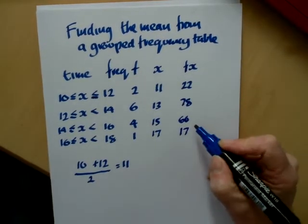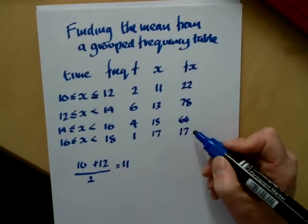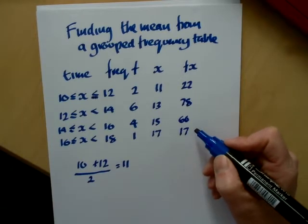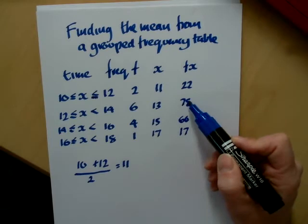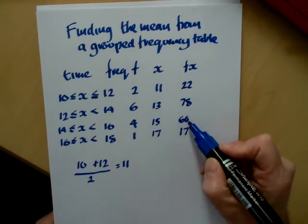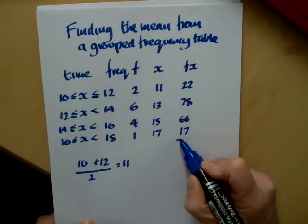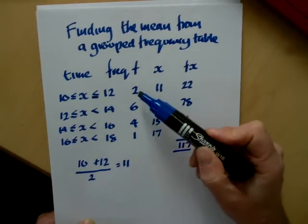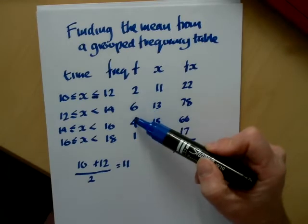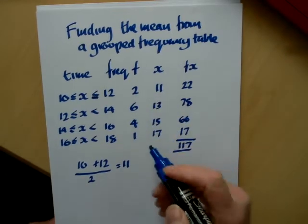Now in most cases, you'll find this question on the calculator paper, but occasionally it's not. Now this one we could do most of it without counting. We've got 22 and 78 is 100, 116 and 17. Our total is 117. Now if we go to our frequencies, we've got 2 and 6 is 8, 8 and 4 is 12, so we have 13.